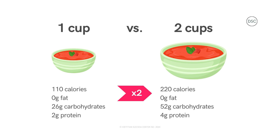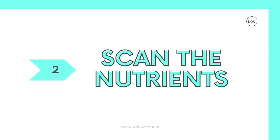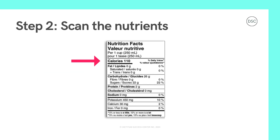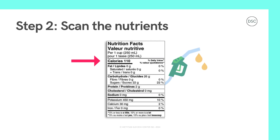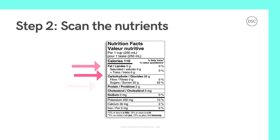This brings us to step number two: scan the nutrients found in the table. As we move down the label, you'll see calories next. Calories act like fuel for your body, similar to how gasoline acts as fuel for a car. Though calories might be helpful to know depending on your nutrition goals, we likely want to pay more attention to the information listed below calories, including fats, carbohydrates, protein, cholesterol, sodium, and vitamins and minerals like potassium, calcium, and iron.